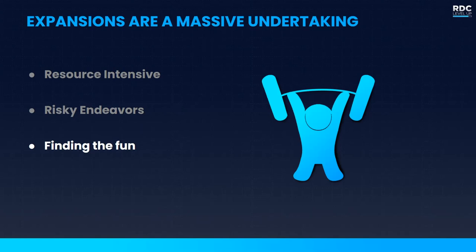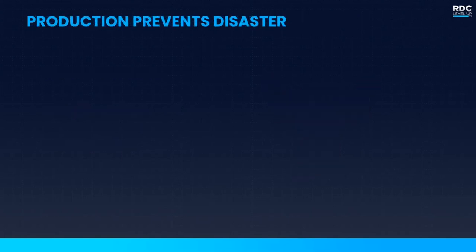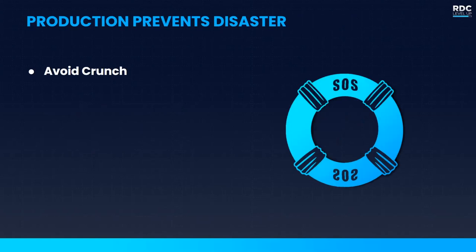With all of this in mind, production helps you prevent disaster. It allows you and your team to avoid crunch. If you are planning ahead, you're able to understand what all of the tasks are that your team needs to do. When we sit down and think about what is required, we tend to underestimate how long things will take. However, when we break down all those tasks and record how long they actually take, we'll get a much more accurate estimation, allowing us to avoid working long hours and weekends.